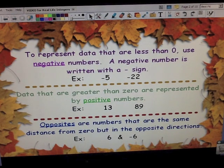They're both the same distance from zero. They're both 6 units, but one is to the left, which makes it negative, and one is to the right, which makes it positive. Therefore they are called opposites.